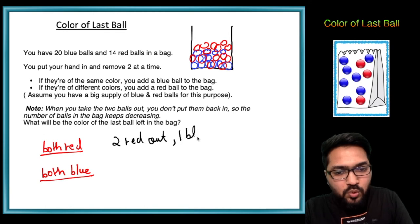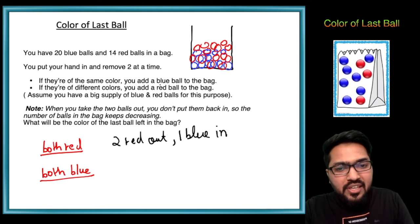In the second case, both blue come out and obviously again we're adding one blue ball inside, so effectively I can say one blue out. We removed two blue balls and put one back in, so effectively one blue ball is being removed.